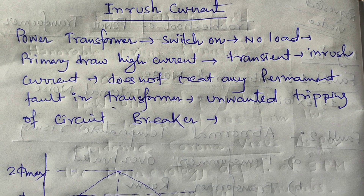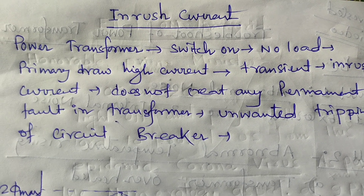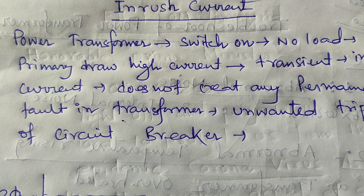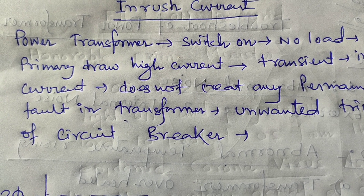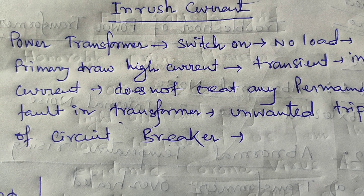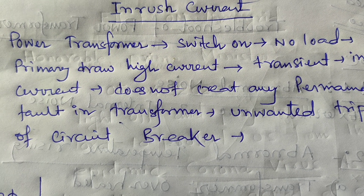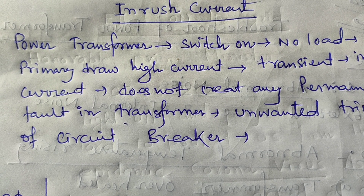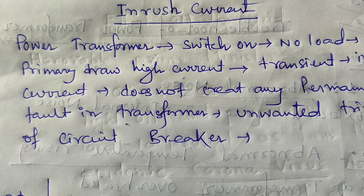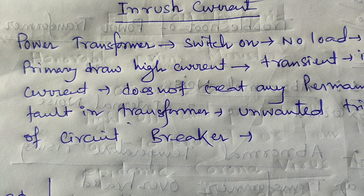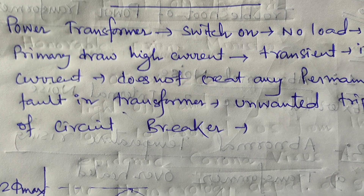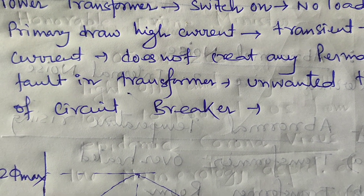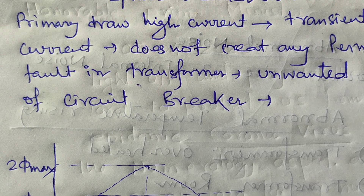Today our discussing topic is inrush current. Inrush current is the instantaneous high input current drawn by a power supply or electrical equipment at turn-on. During switch-on, this inrush current flows. It arises due to the high initial currents required to charge the capacitors and inductors or transformers. The inrush current is also known as the switch-on charge or input charge current. During turn-on, the discharged capacitors in the power supply offer low impedance, allowing high current to flow into the circuit as they charge from zero to the maximum value.